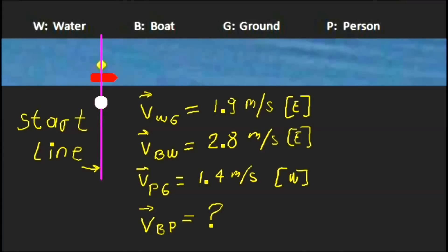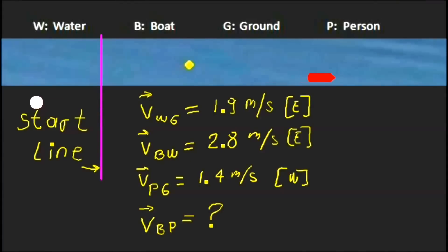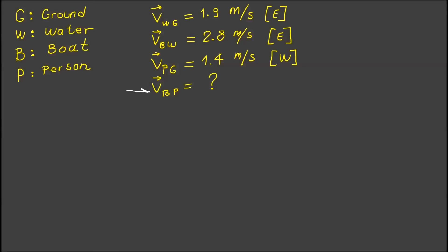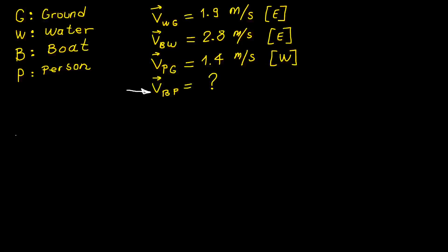Let's run the animation. As we can see, the person, the boat, and the wood start at the same time with constant velocities. How can we calculate the velocity of the boat relative to the person? V_BP is a function of three velocities, so there will be three V terms on the right side.